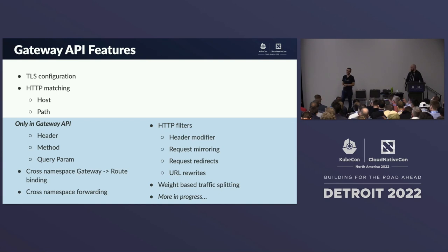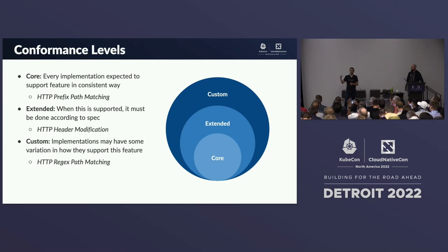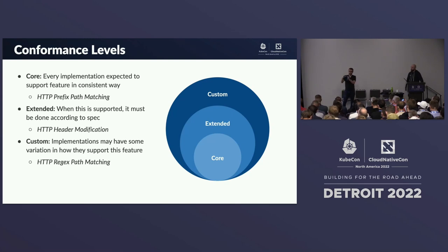You may wonder how you can provide all these new features when not everyone can implement everything. To accomplish that, we introduced the concept of conformance levels. Every field in Gateway API is assigned one of these levels. Most features are at the Core conformance level — every single implementation must implement that field in a conformant way that passes our conformance tests. Then we have Extended — for example, prefix matching might be core but header matching is extended, not every implementation can support it.